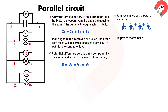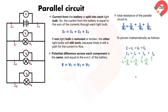This can be proven mathematically as follows. Since E equals V_1 equals V_2 equals V_3, and I_T equals I_1 plus I_2 plus I_3, substituting I_T equals E over R_T, I_1 equals V_1 over R_1, I_2 equals V_2 over R_2, and I_3 equals V_3 over R_3. We can cancel out all of V because they are equal. So, 1 over R_T equals 1 over R_1 plus 1 over R_2 plus 1 over R_3.